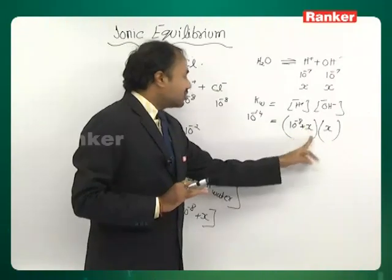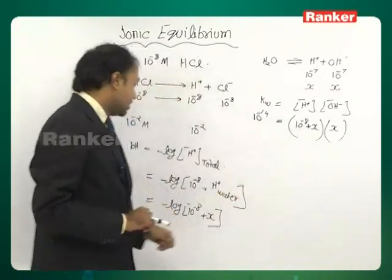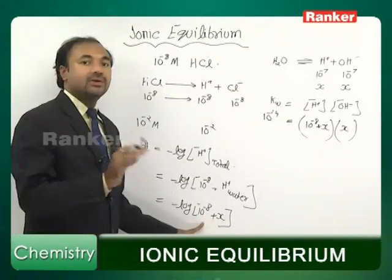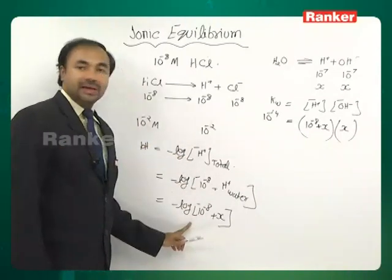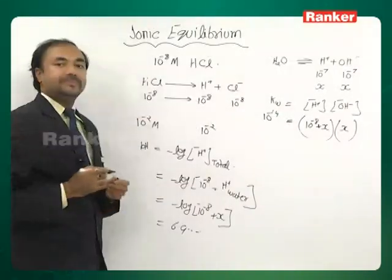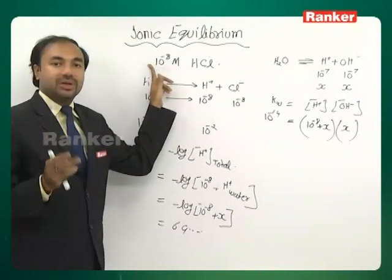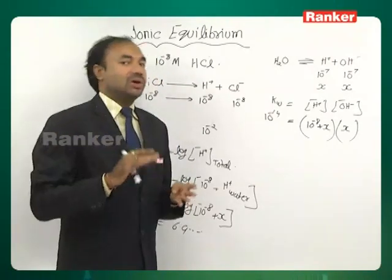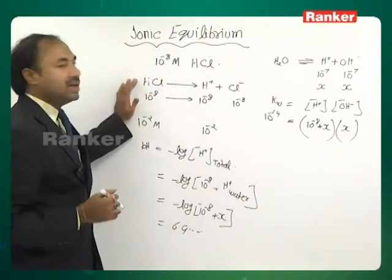Solving this quadratic equation, the value of x comes out to be close to 10⁻⁸, which cannot be neglected compared to 10⁻⁸ from HCl, unlike the previous case. After solving and substituting back, pH = -log(10⁻⁸ + x) comes out slightly less than 7 — approximately 6.9. The solution remains acidic, as expected, but just negligibly so due to extremely high dilution.